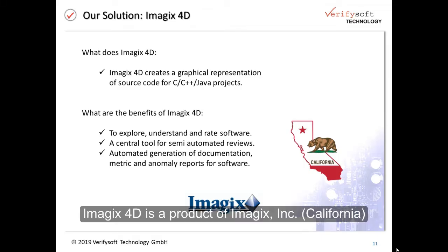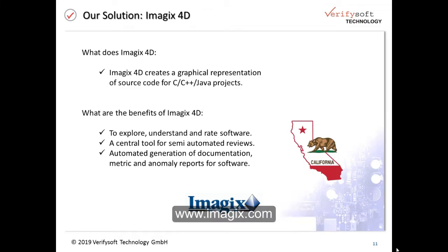This is Imagix 4D. What Imagix 4D basically does is it creates a graphical representation of source code for C, C++, and Java projects. The benefits you have from it are that you can explore, understand, and rate your software.